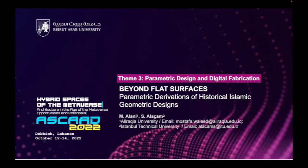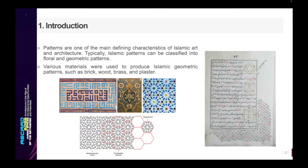Patterns are a common feature of Islamic architecture that exist in a variety of shapes and types. In general, Islamic patterns have been classified into two main categories: Arabic calligraphy, in which various types of calligraphy are used for architectural decoration, and the arabesque, which can be further subdivided into two subcategories — floral and geometric patterns. Today's presentation is concerned with the latter, the geometric patterns.